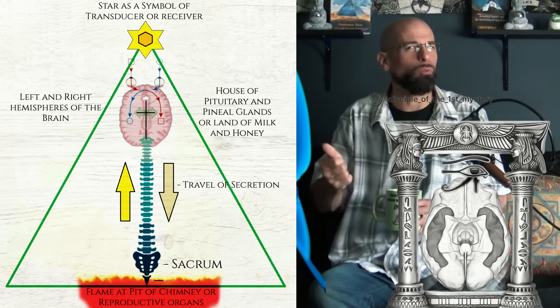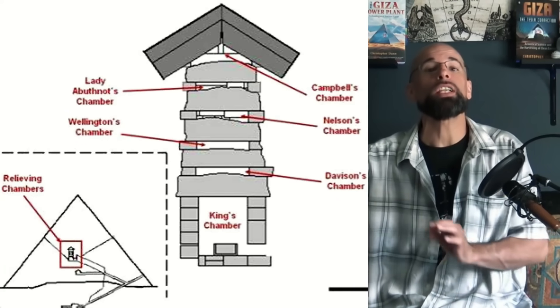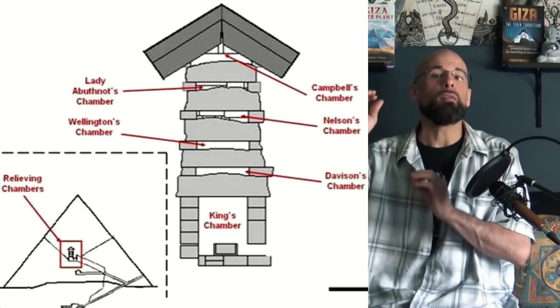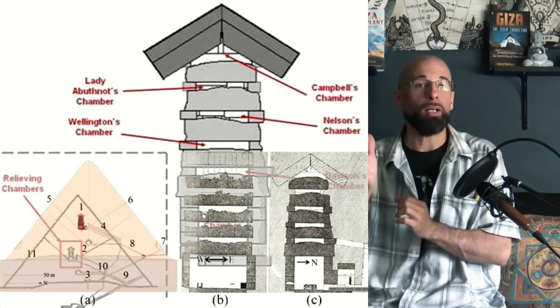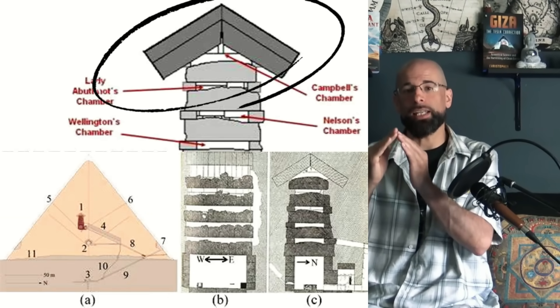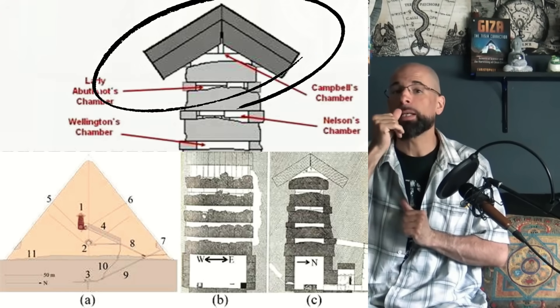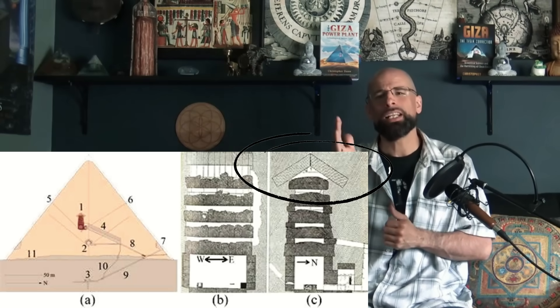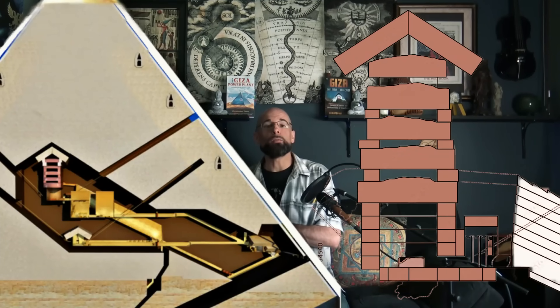These quartz-loaded granite beams are 17 feet of heavy-duty sheer resonant vibrational force. Above them are two thick insulating stones, isolating them from the materials above. If you guessed that these two upper slabs are white limestone, thank you for paying attention. I appreciate you.